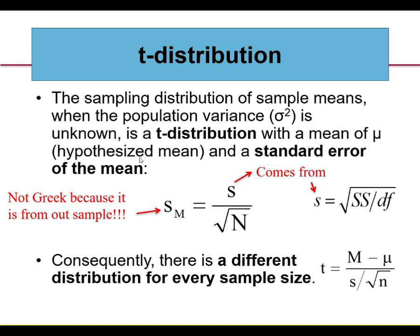The t-distribution is a sampling distribution of sample means when the population variance — sigma squared — is not known. We use a t-distribution with a mean of mu, the hypothesized mean, and a standard error of the mean. Last week we had sigma sub m; now it's in Latin letters because we're getting this value from our sample. The standard error is the square root of the sum of squares divided by the degrees of freedom, all over the square root of the sample size.